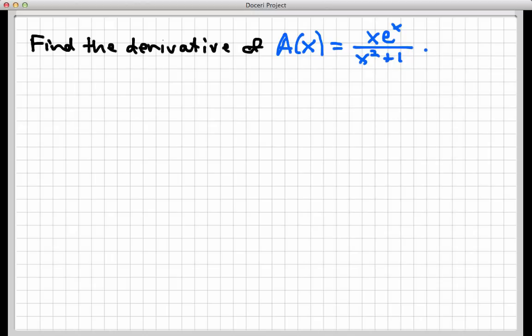And it's gonna be our job to decide what rule to apply when. This is gonna be a pretty challenging process here, so let's try to think through it. So here's the function A(x) equals x times e to the x, all divided by x squared plus 1.